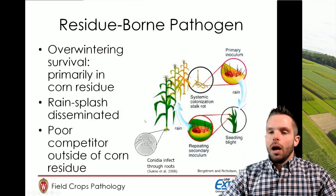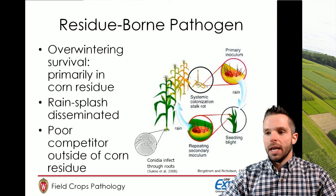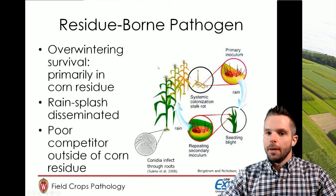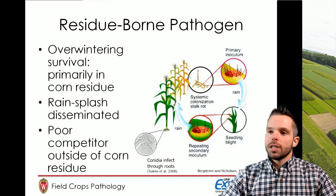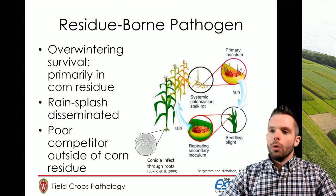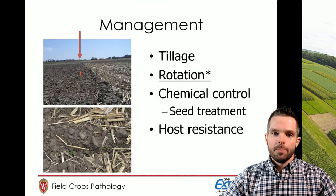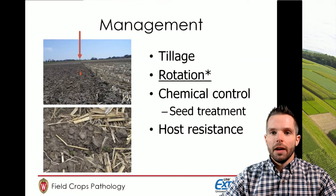We know that the anthracnose stalk rot pathogen is a residue-borne pathogen, meaning it overwinters on corn residue in those fields. It makes spores on that residue, and those spores are then rain-splashed onto the corn plants in season. This particular fungus is a poor competitor outside of corn residue, so simply managing that residue can reduce the amount of spores available in season to infect those plants. Therefore, tillage or rotating can help manage this. If tillage isn't an option, rotation can be — and it's a very cheap option to consider, especially on fields where you've struggled with stalk rot and have been corn-on-corn for several years in a row.